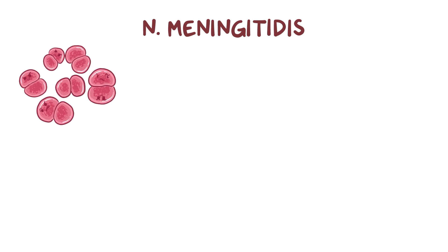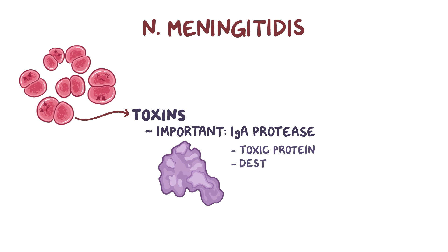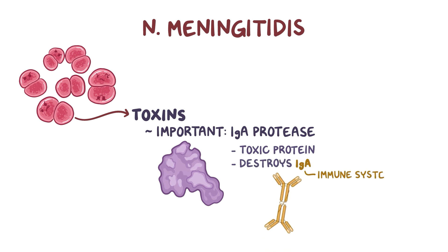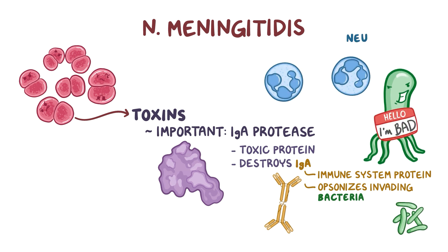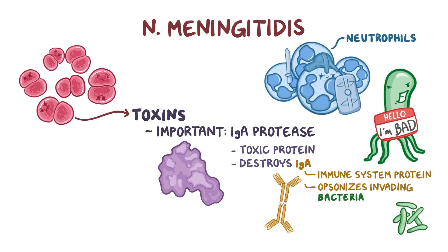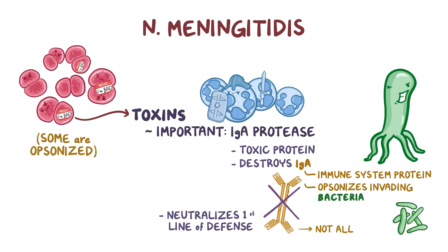Additionally, N. meningitidis produces toxins, and the most important one is IgA protease, a toxic protein that this bacterium uses to destroy immunoglobulin A, or IgA. IgA is an immune system protein found in the nasopharyngeal mucosa secretions that normally opsonizes invading bacteria, meaning it tags them so neutrophils can recognize and destroy them. So IgA protease neutralizes the first line of mucosal defense. However, not all IgA molecules get neutralized, so some N. meningitidis bacteria are still opsonized and they get attacked by neutrophils.